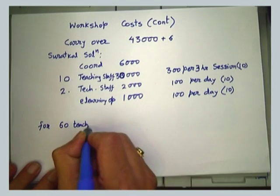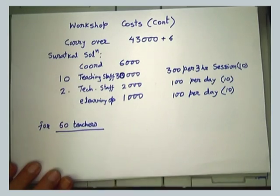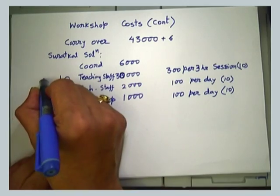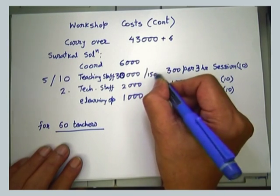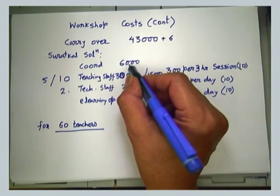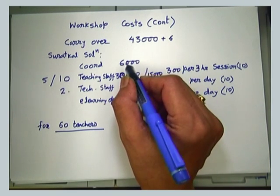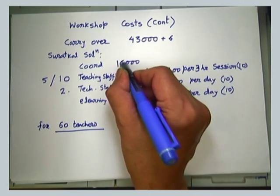It depends on the number of participants registered for the course. If there are more we cannot predict how many people we require for teaching and support. This figure is for 60 candidates. So will it be correct to assume that for 30 candidates, 5 teachers will do? Yes. So either 5 or 10, meaning the cost could be either 30,000 or 50,000. And 60 candidates will need 2 coordinators, so that becomes 12,000 rather than 6,000.